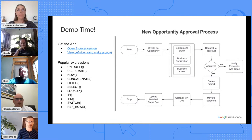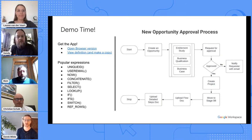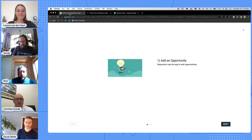It's a pretty basic workflow approval process. The focus for this conversation is going to be all the formulas we use to create this type of behavior inside AppSheet. I have a list of formulas I'm going to focus on — unique ID, user email — you can see the list on the left-hand side. Let's jump over to the other screen and I'll show you how all this is made in AppSheet.